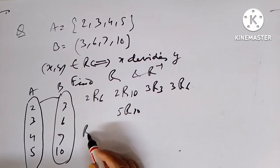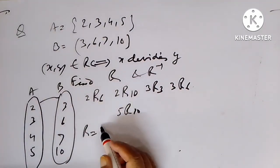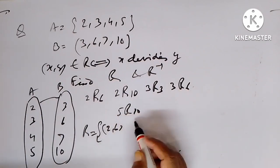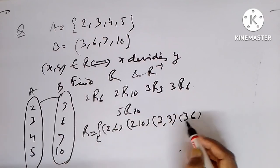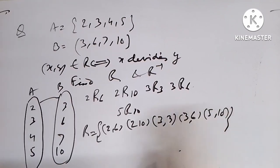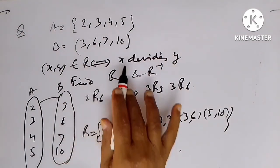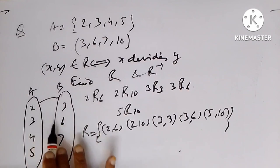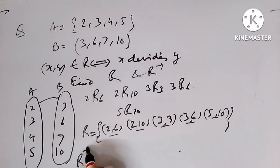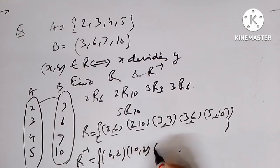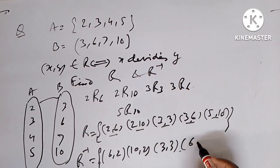And so R is {(2,6), (2,10), (3,3), (3,6), (5,10)}. And similarly you can find R inverse by reversing the pairs: R inverse is {(6,2), (10,2), (3,3), (6,3), (10,5)}.